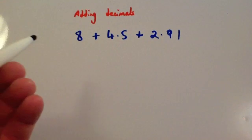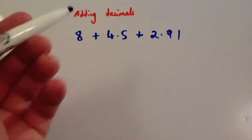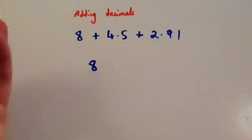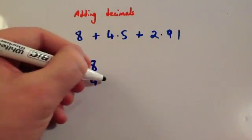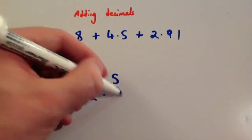And in our final example, this time we have got 8 plus 4.5 plus 2.91. So again, line up the numbers. 8 would be 8, you could put the point 0 if you want, 4.5 and 2.91.